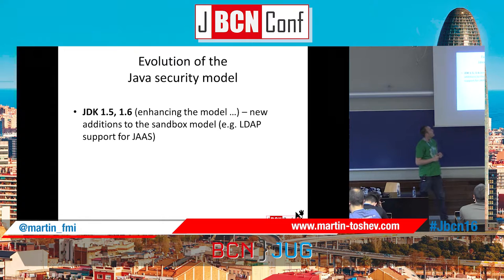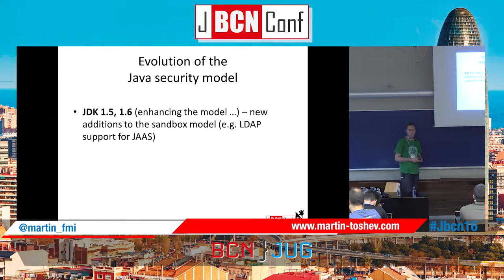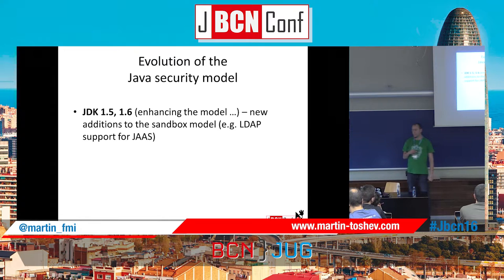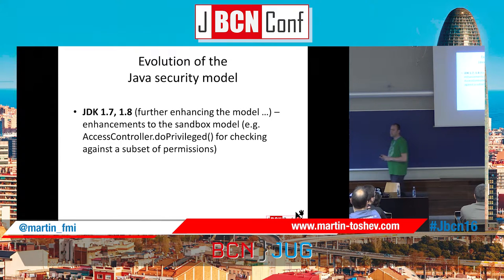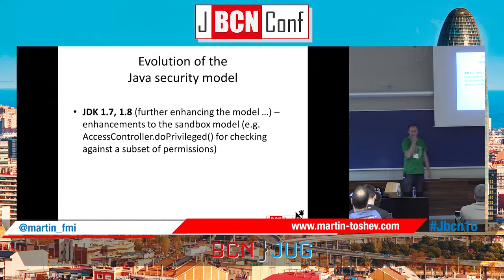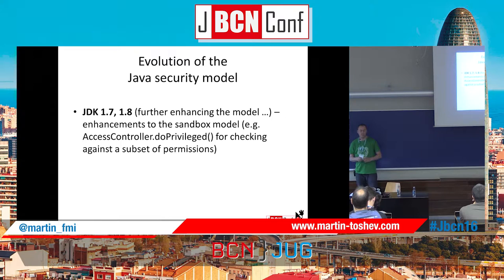In JDK 1.5 and 1.6, there were no major changes to the security model. There were some slight changes — for example, the LDAP login module was introduced in version 1.6, and there were some extensions to how JAAS used login modules. In versions 1.7 and 1.8 of the JDK, there were some enhancements — for example, the AccessController.doPrivileged() method was allowed to check only against a subset of permissions. So you may escalate privileges but specify a particular set of permissions to check against, rather than granting all permissions to your application.